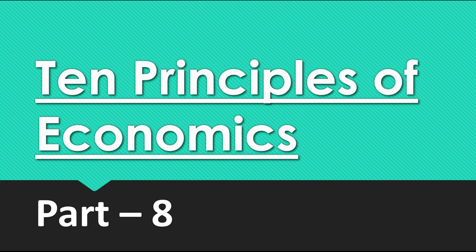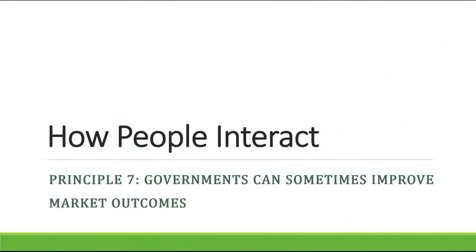Hello students, next we are going to start with Part 8 of 10 Principles of Economics: How People Interact. Principle number 7 — Governments can sometimes improve market outcomes.